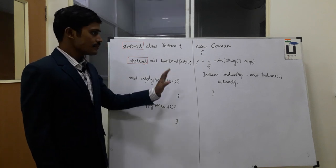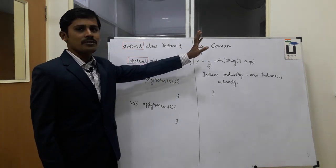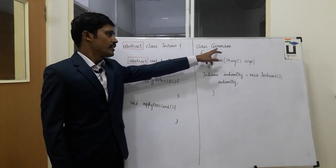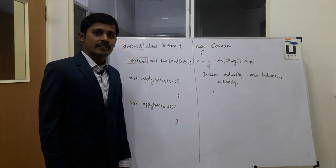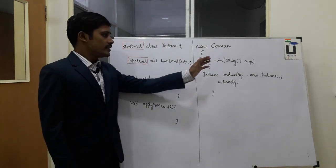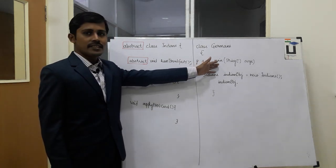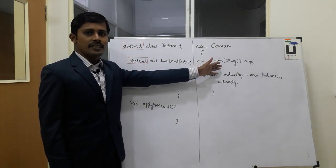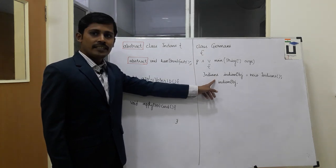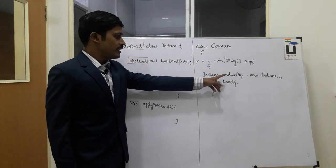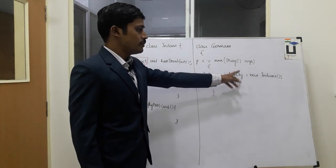Now let's use this. What class are we creating? Germans is creating a class. In the class, we will use public static void main with arguments. Let's use this class, let's use the Indian object.